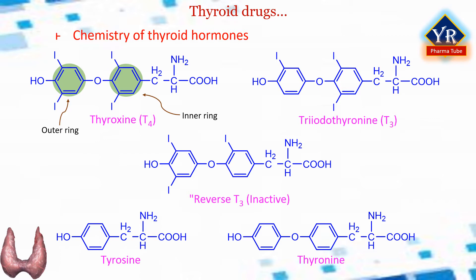The number and position of the iodines is important. Thyroxine contains four atoms of iodine and is thus called T4. Triiodothyronine contains three atoms of iodine and is called T3. T3 and T4 each contain two phenyl rings linked by an ether bridge. Several other iodinated molecules are generated that have little or no biological activity; so-called reverse T3 is such an example. These hormones are poorly soluble in water and more than 99% of the T3 and T4 circulating in blood is bound to carrier proteins.